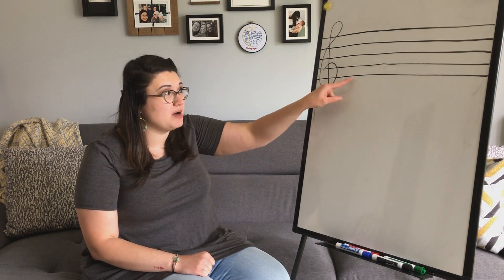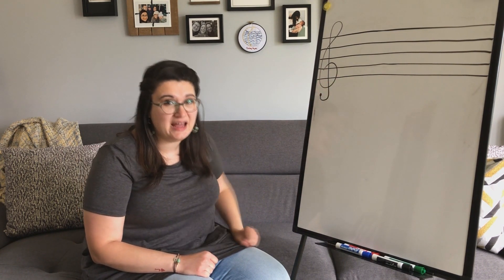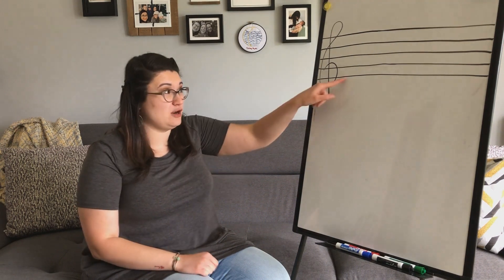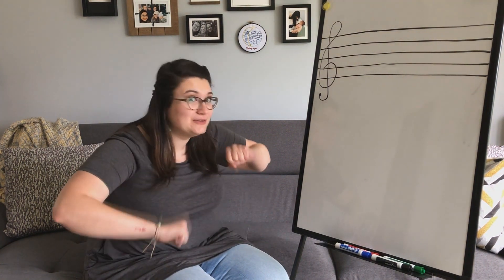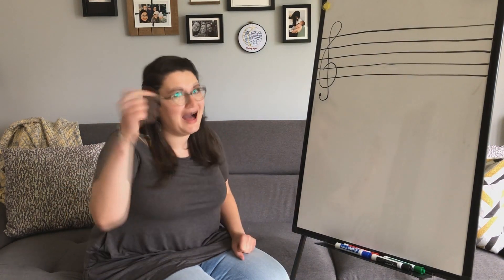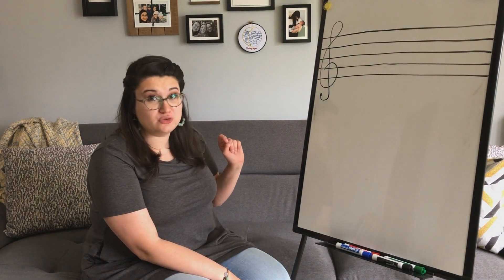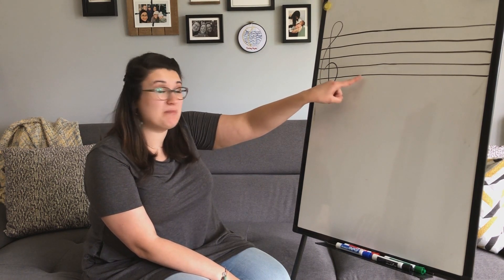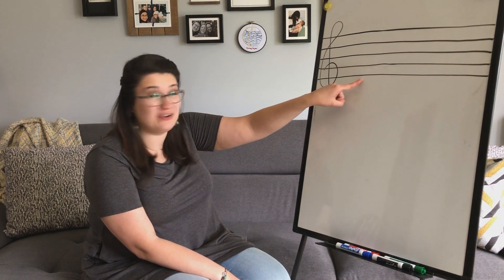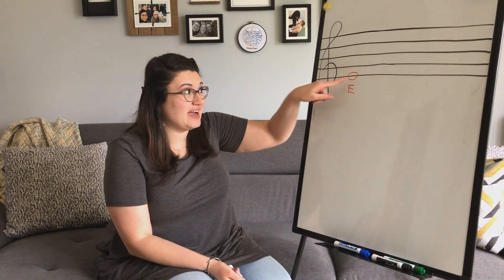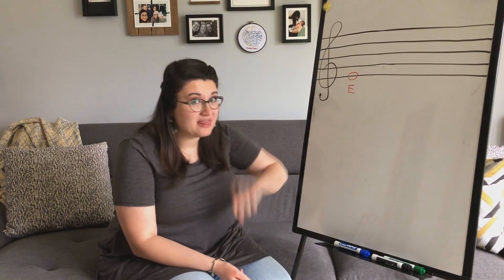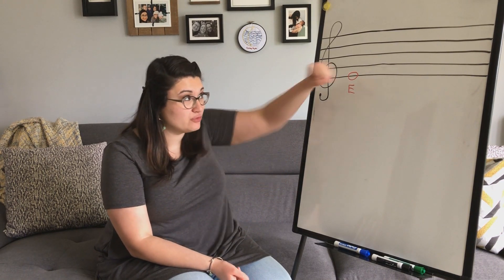We are going to start the bottom line on E. That's all it tells us, that our bottom line is going to be the pitch E. If anyone would like to sing our favorite note naming song, our Every Good Boy Does Fine on the line, I will link that down below. So treble clef tells us that our very bottom line is going to be the letter E. That's where we're going to start. There's our E.